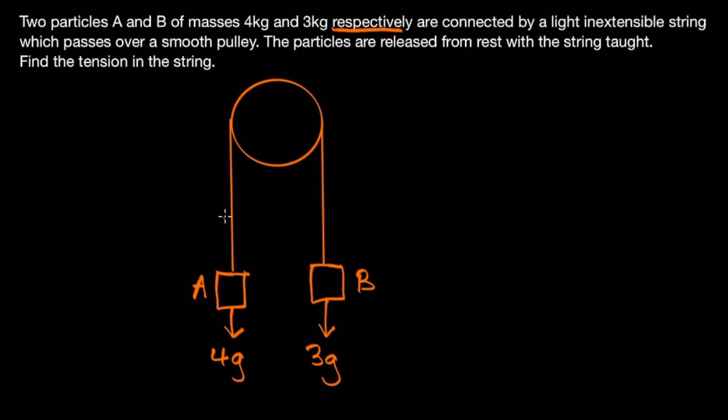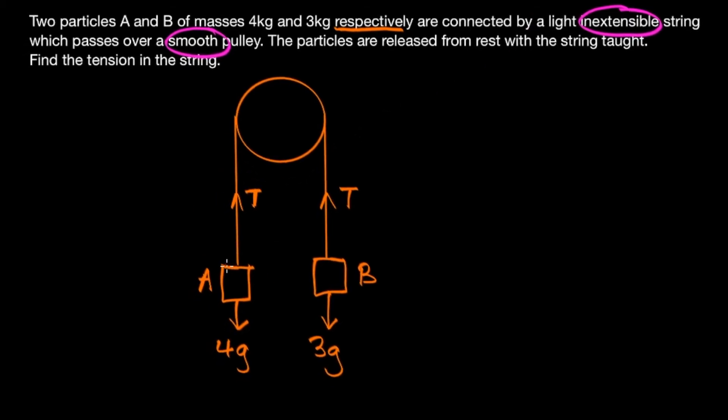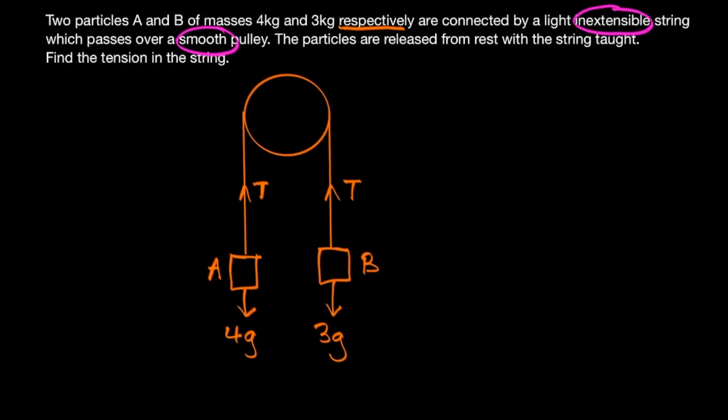And we also have the tension in the string in both ends pointing towards the pulley. Notice how in the question we're told that the string is inextensible and the pulley is smooth, so that tells us the tension in both ends of the string are exactly the same. And we're also told that the string is light, so we don't need to worry about any of the string contributing towards the weight of any of the masses.